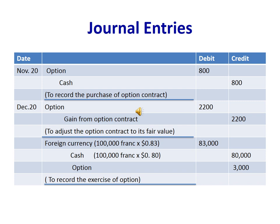On November 20, we record the purchase of the option contract: debit Option $800, credit Cash $800. On December 20, we adjust the option contract to its fair value — the option increased by $2,200: debit Option $2,200, credit Gain from Option Contract $2,200.